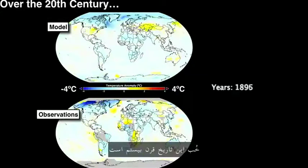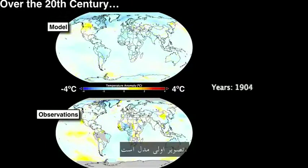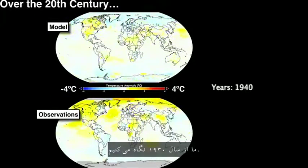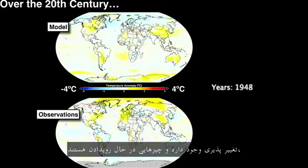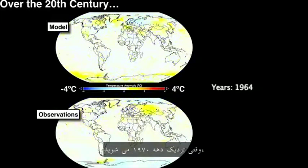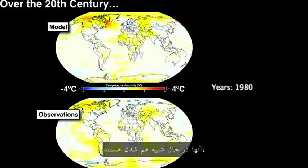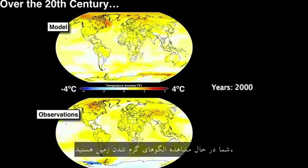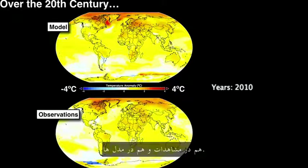So this is a history of the 20th century. The first one is the model — the weather is a little bit different to what actually happened. The second one are the observations. And we're going through the 1930s, there's variability, there are things going on, but it's still kind of in the noise. As you get towards the 1970s, things are going to start to change, to start to look more similar. And by the time you get to the 2000s, you're already seeing the patterns of global warming, both in the observations and in the model.